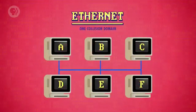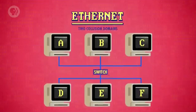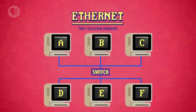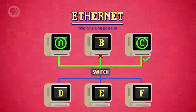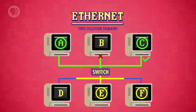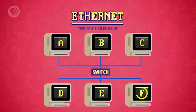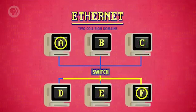To reduce the likelihood of collisions, we can break a network into two collision domains by using a network switch. It sits between the two smaller networks and only passes data between them if necessary, by keeping a list of what MAC addresses are on each side. So if computer A wants to transmit to C, the switch doesn't forward the data to the other network. This means if E wants to transmit to F at the same time, the network is wide open and two transmissions can happen at once. But if F wants to send data to A, the switch passes it through and both networks are briefly occupied.